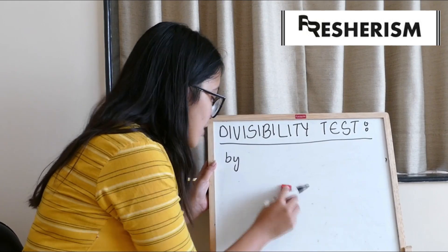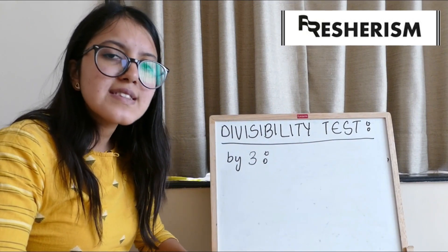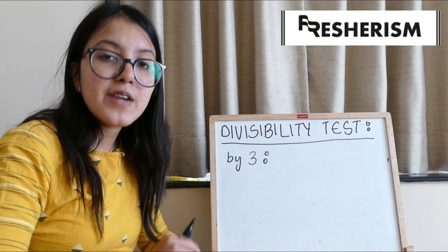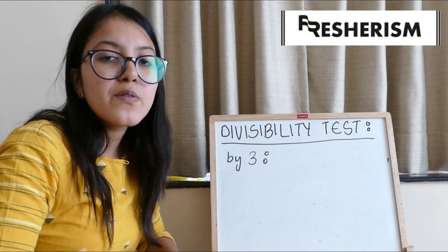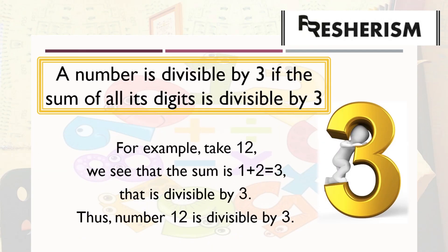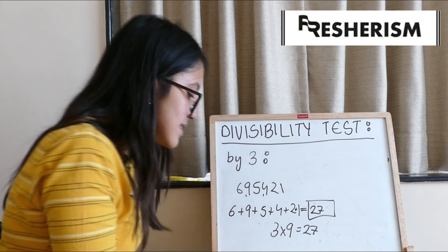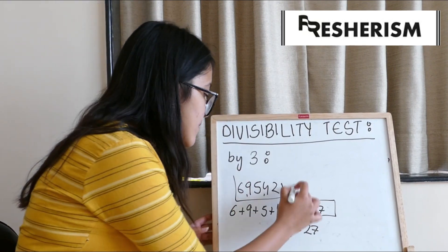Moving on to our next divisibility test, which is the test for 3. Any number where all its digits sum up to be a number which will be completely divisible by 3, the whole number would be divisible by 3 completely. Let us take an example: 695,421. If we add all its digits, we get 27. We all know that 27 is completely divisible by 3, which is 3 into 9 equals 27. Hence, this number is totally divisible by 3.